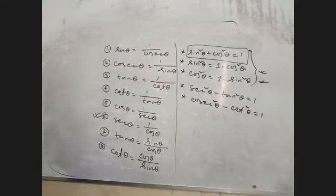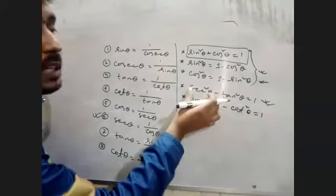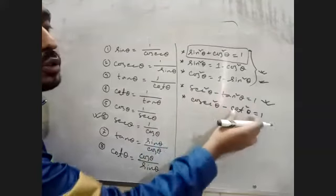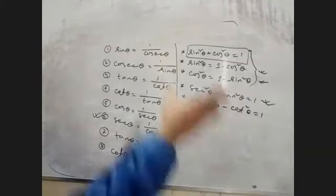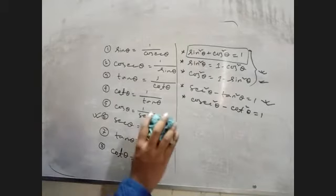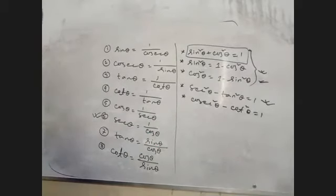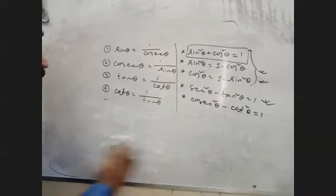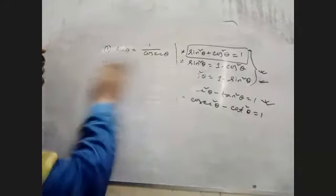We will cut this piece, then we will cut one square. It is not square. We will put that piece here. The piece is the piece. We will cut this piece.